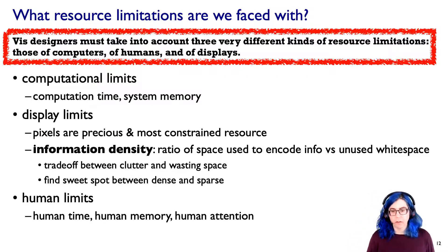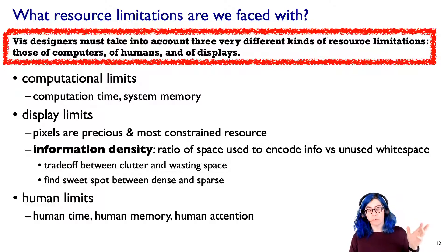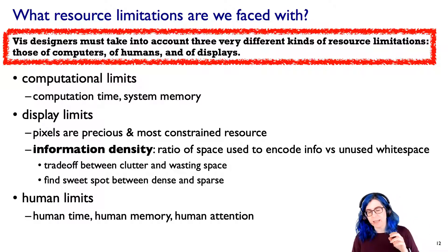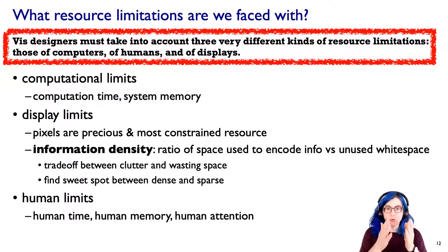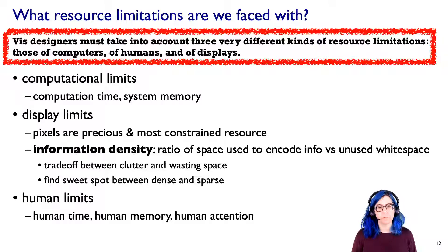We want to think about this trade-off — too much clutter is bad, wasting space is bad — and find that sweet spot between density and sparsity that allows you to communicate what you want while still seeing things in enough detail. And of course there are the limits of humans. Computers are getting faster. Displays are improving. But the human visual system and brain — that's the part that's not going to change. How long does it take a person to do something? How much can we remember? How long can we focus and attend? These are very stringent limits.